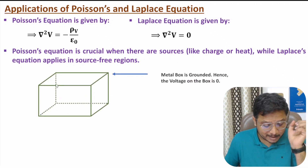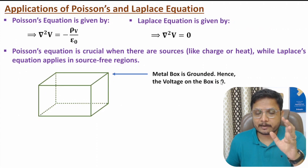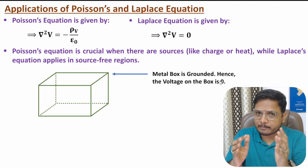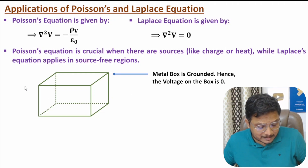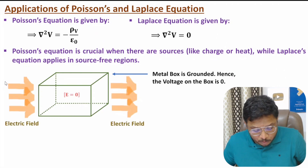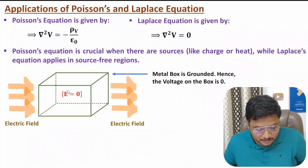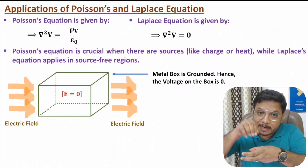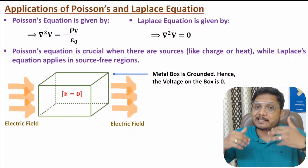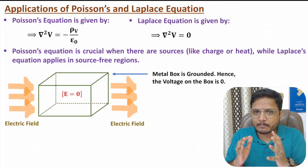Let me explain one practical application. Consider a metallic box connected to ground — on the surface of this metallic box the voltage is zero. When an electric field passes through the environment outside, if the metallic box is grounded, then inside the metallic box the electric field will be zero. This means there is zero electric field inside due to the exterior environment.